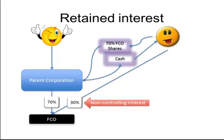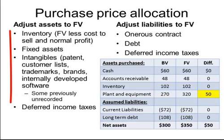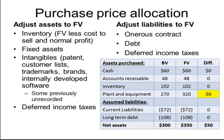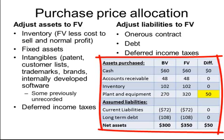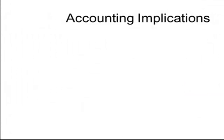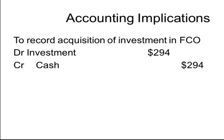Let's work through the acquisition accounting to understand the implications. All the same purchase price allocation considerations previously discussed are applicable here. It is necessary to determine the fair value of all the recorded and unrecorded assets and liabilities to enable an allocation of the purchase price. Examples of things to look for are listed here. We will leave deferred taxes for now, as this can get a little complicated, and I want to ensure that you have the consolidation basics under your belt before we get into taxes. From the table presented here, we see that plant and equipment have a fair value of $50,000 more than the assets are being carried on the books of EFCO.